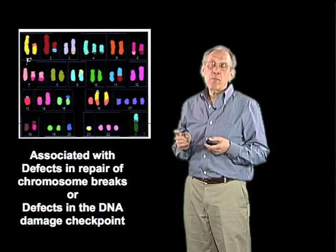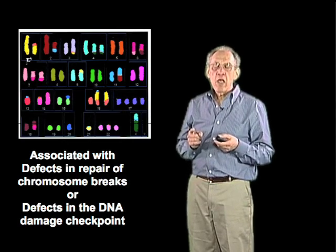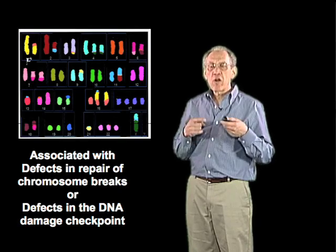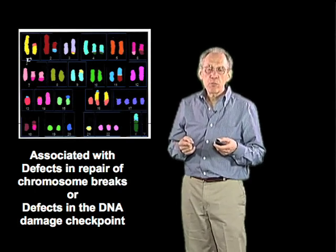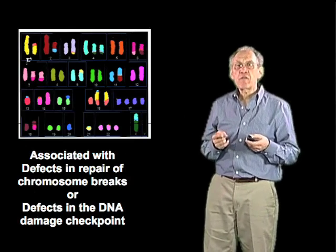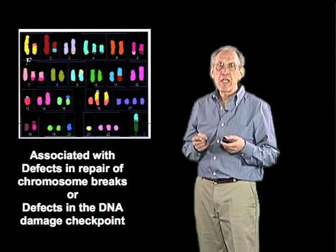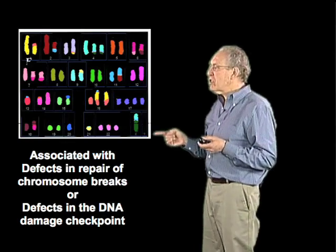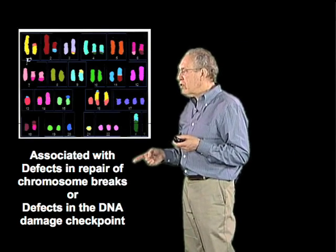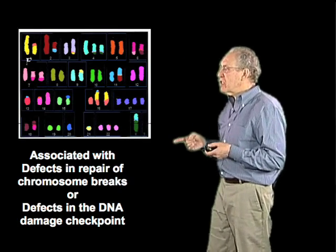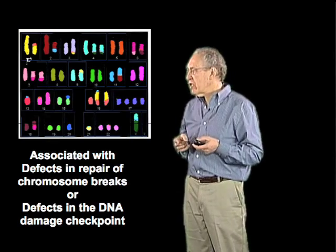The DNA damage checkpoint is a mechanism by which cells sense that they have broken chromosomes. They arrest their ability to progress through the cell cycle, blocking progression prior to mitosis, effectively giving the cell much more time to repair the DNA damage. Either because cells have a defect in repair or in this checkpoint, they lead to the instability that we're interested in understanding more about.